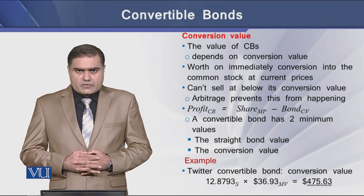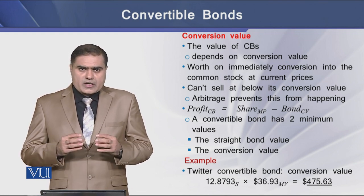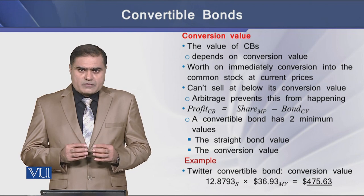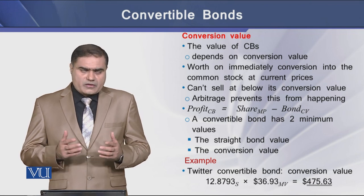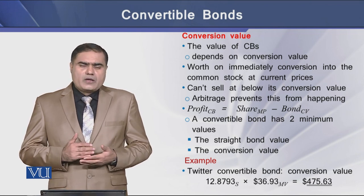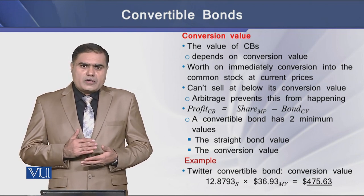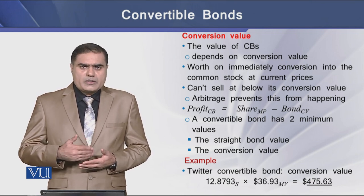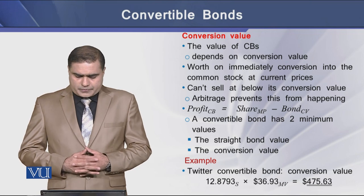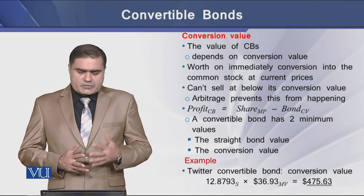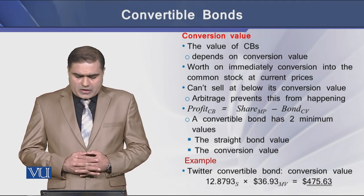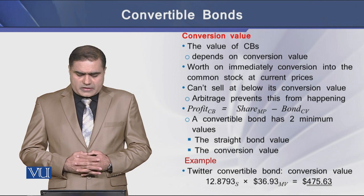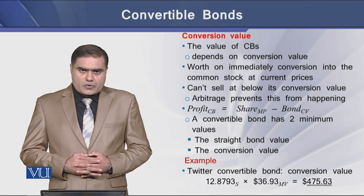A convertible bond cannot sell below its conversion value — it is generally not sold by the holder below its conversion value, because arbitrage prevents the bond holder from doing this.